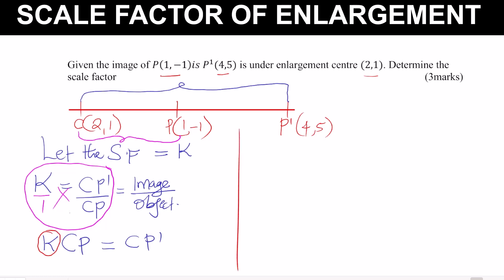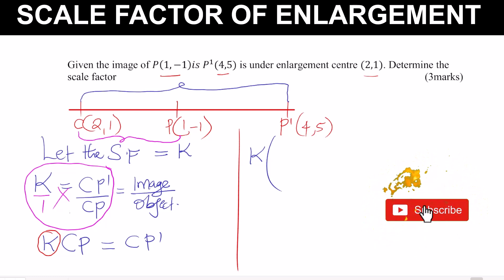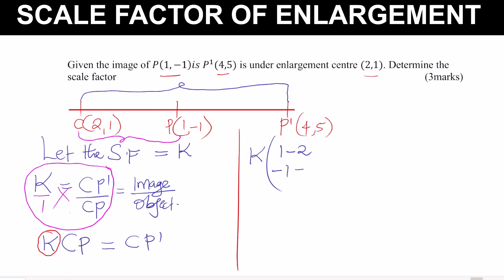Now, CP is the displacement of the object from C to P. The x-displacement is the x-coordinate of P minus the x-coordinate of C: 1 − 2. The y-displacement is the y-coordinate of P minus the y-coordinate of C: −1 − 1. So CP gives us the vector (1−2, −1−1).